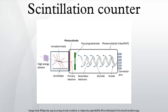Scintillation counter as a spectrometer: Scintillators often convert a single photon of high-energy radiation into a high number of lower-energy photons, where the number of photons per megaelectron volt of input energy is fairly constant.